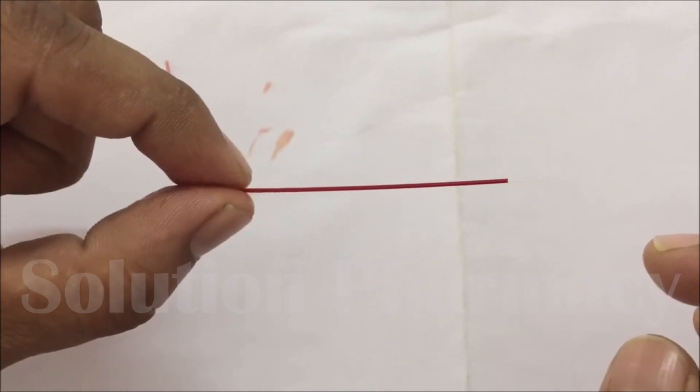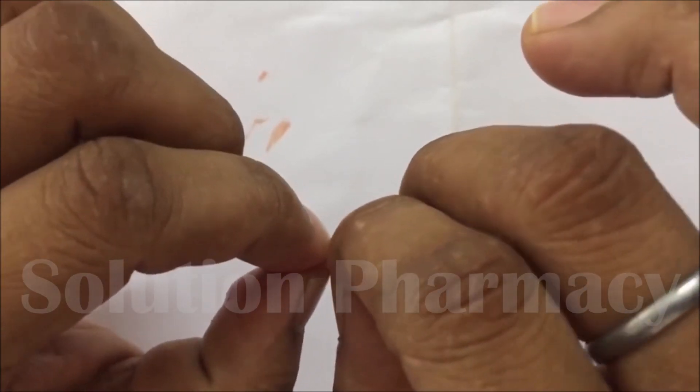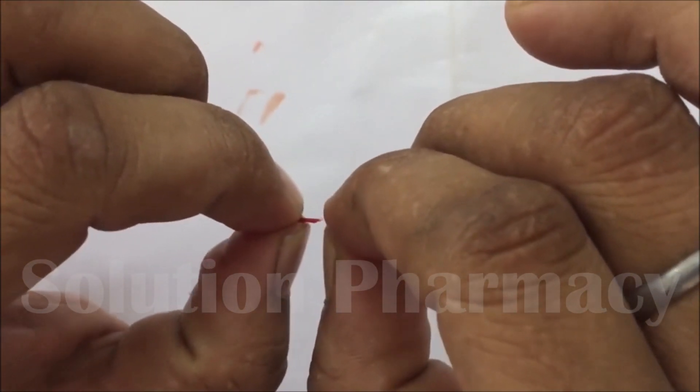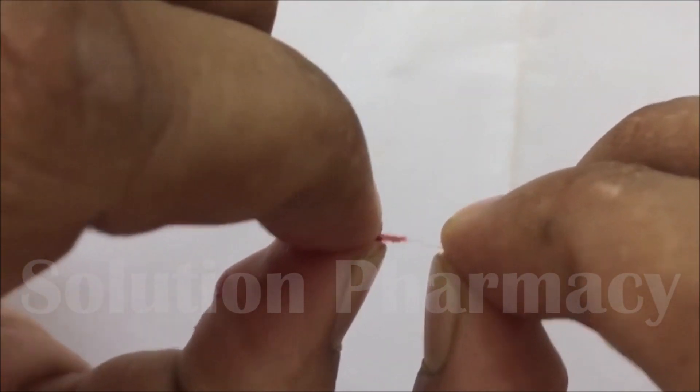Now again break a small portion of the capillary tube at one end. Now here you can observe the formation of fibrin thread, meaning the thread of clotted blood between the broken ends of the capillary tube.